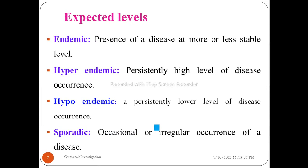The levels include endemic, hyperendemic, hypoendemic, and sporadic. Endemic is the presence of disease at more or less stable levels — this is the endemic normal. Hypoendemic is the persistent level of disease occurrence at a low level, while hyperendemic refers to persistently high levels of disease.